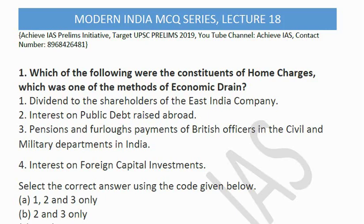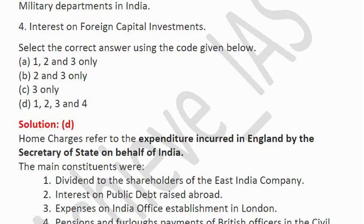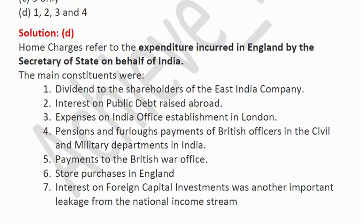The correct option is D — that is, 1, 2, 3, and 4 are all correct. Home charges were the expenditure incurred in England by the Secretary of State on behalf of India. The main constituents were dividends to shareholders of the East India Company, interest on public debt, expenses on the Indian office establishment in London, pensions and furlough payments of British officers, payments to the British War Office, store purchases in England, and interest on foreign capital investments — all of which drained India's national income.